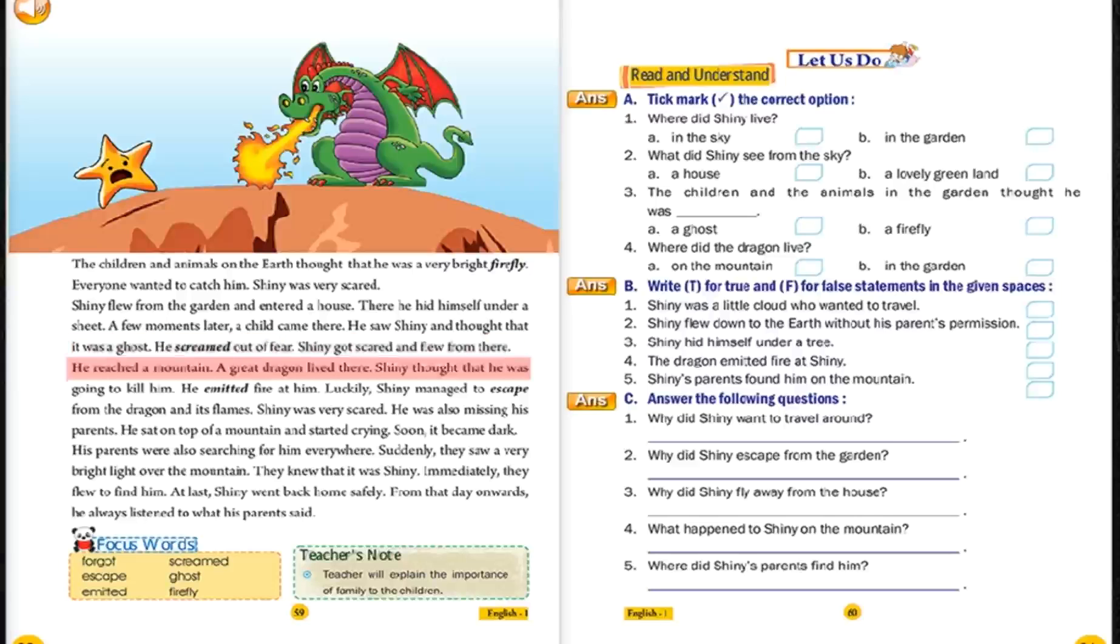Shiny got scared and flew from there. He reached a mountain. A great dragon lived there. Shiny thought he was going to kill him. He emitted fire at him. Luckily, Shiny managed to escape from the dragon and its flames. Shiny was very scared. He was also missing his parents. He sat on top of a mountain and started crying. Soon, it became dark.